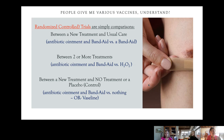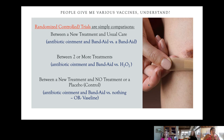Randomized control trials — or controlled trials, depending on who says it — are simply comparisons. They can be between a new treatment versus usual care, for example antibiotic ointment and a band-aid versus just a band-aid, or between two or more treatments, or between a new treatment and no treatment or a placebo — also known as a control — which is where we get the word 'randomized control' from.